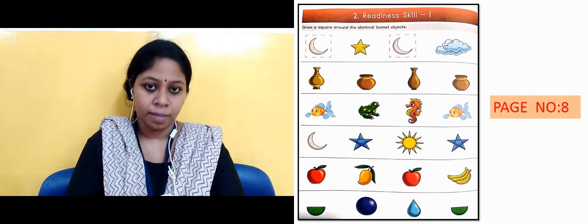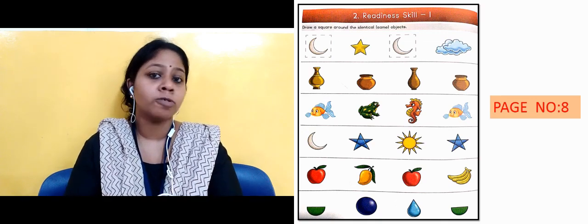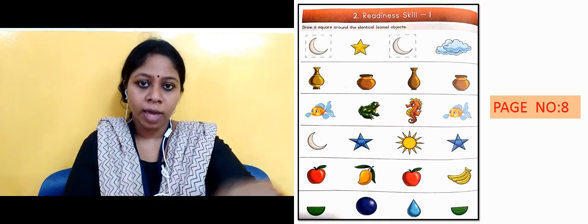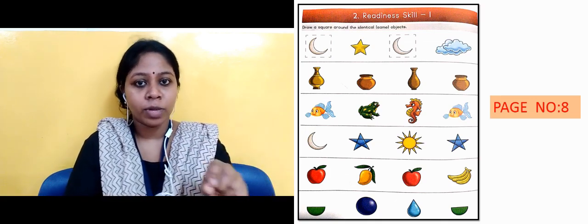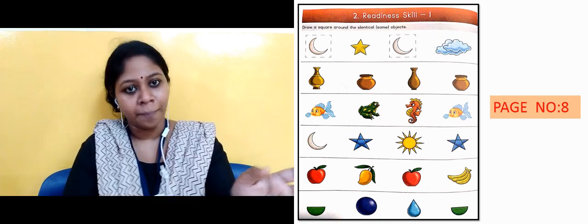You have readiness skill 1. You have to square the similar images. So you will do this activity, practice this exercise and tell mama to make you do this for two days. I will make a square around the same objects.